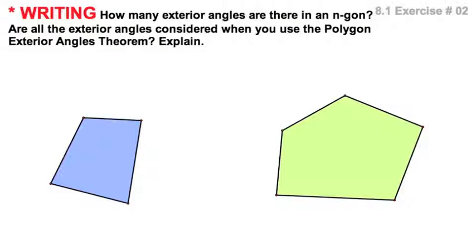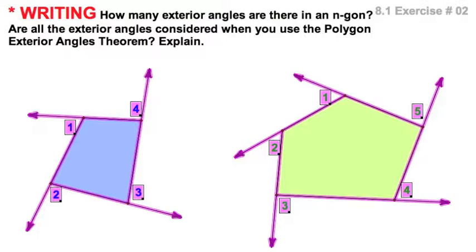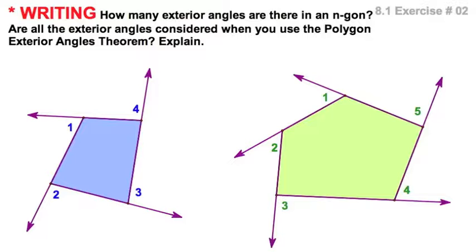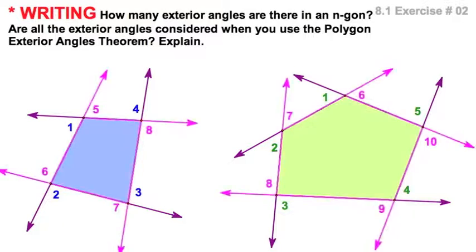While we're at it, let's define exterior angles. Well, this is all you do. Extend each side, make a ray out of it, and you can see the exterior angles forming. Now, I'm drawing one for each vertex, but I could extend the sides the other way. So, I could see I have two for each vertex.